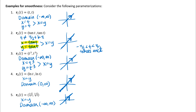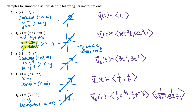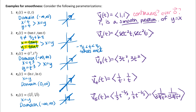To determine whether these are smooth parameterizations, I need to check the velocity vector for each. There are two conditions: the velocity vector must be continuous, and it must never be the zero vector. For v1, the velocity vector is continuous for all values of t, and it is never the zero vector — both components are always one. So r1 is a smooth parameterization of this line.